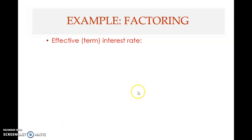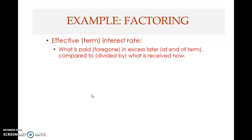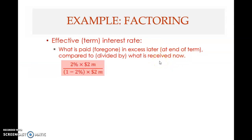Welcome back to part 9 of chapter 18. We are looking at solving the problem of factoring. The last part ended with computing the effective interest rate. The effective interest rate is computed by looking at what is paid or foregone in excess at the end of the term, compared to or divided by what is received now.